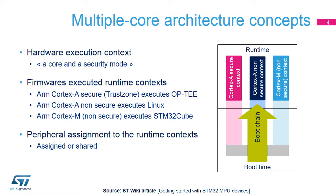Each hardware execution context may support a part of the boot chain execution at boot time, and supports the execution of a firmware at runtime. On the STM32MP1 microprocessor, there are also three runtime contexts: ARM Cortex-A Secure executes OP-TEE Secure OS, ARM Cortex-A Non-Secure executes Linux OS, and ARM Cortex-M executes STM32Cube.